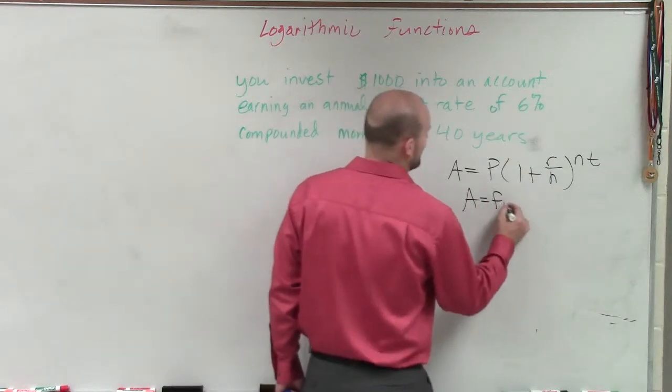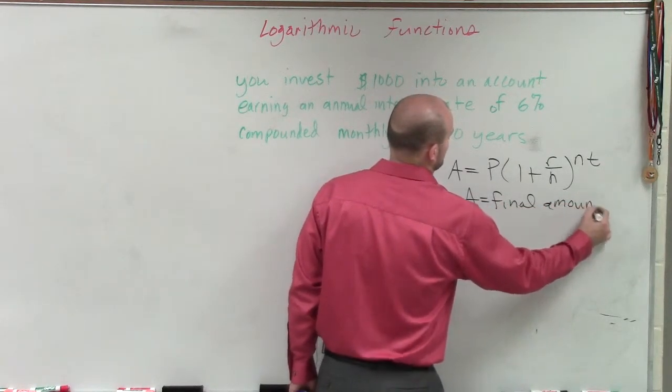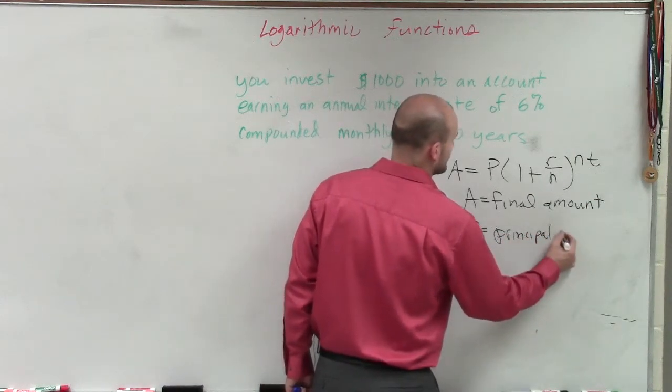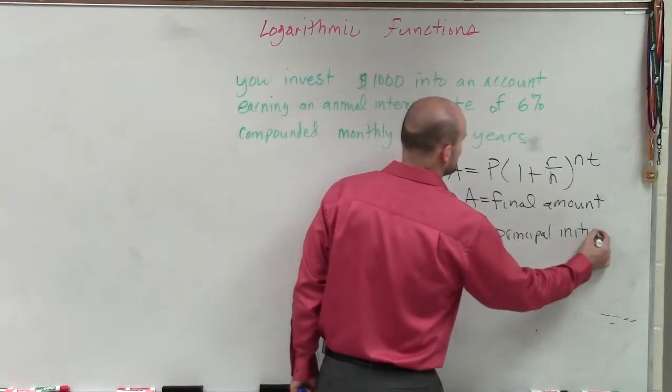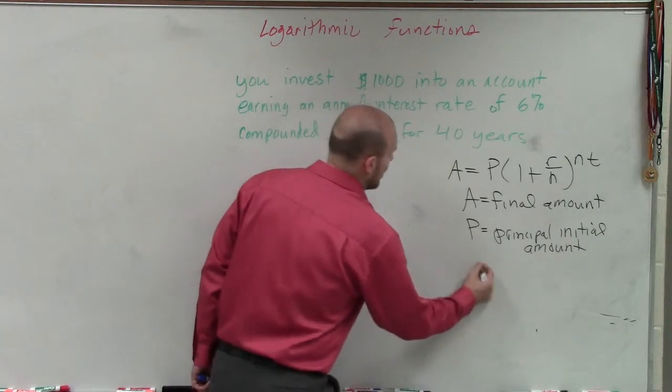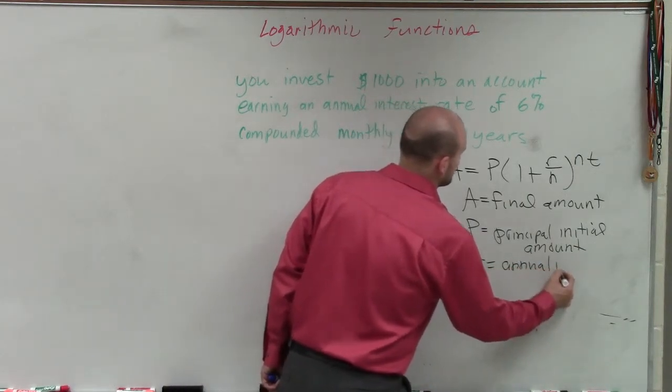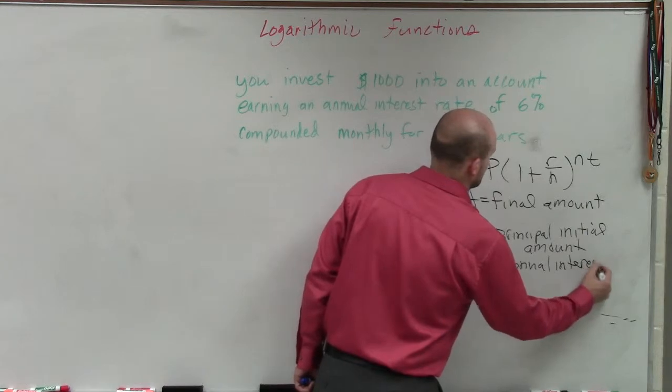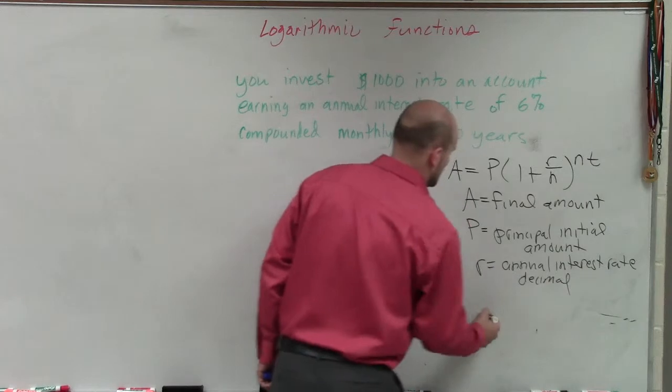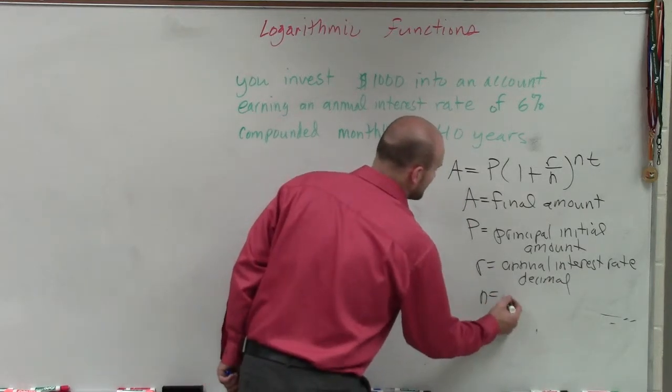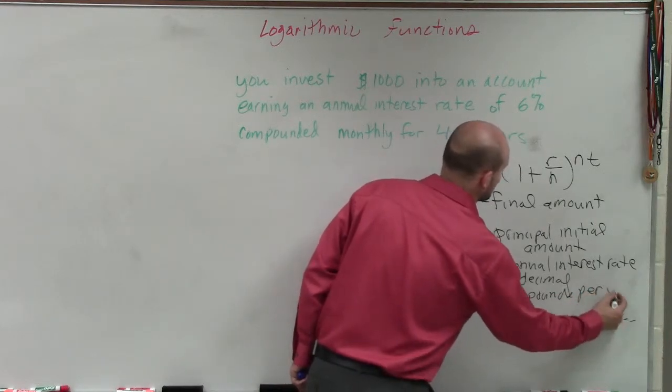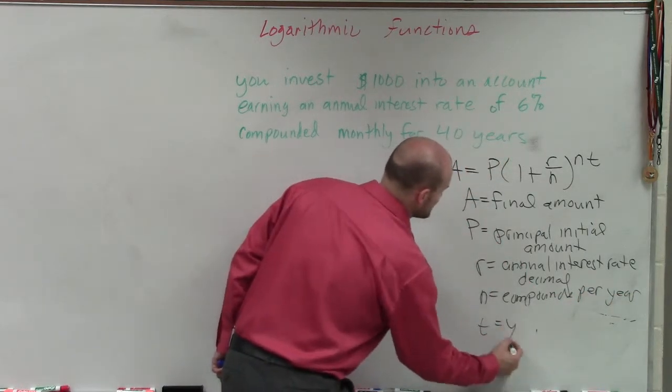So A is what we call our final amount. P represents our principal, which is our initial amount. R represents our annual interest rate, and that's in decimal form. N represents the number of compounds per year, and T represents years.